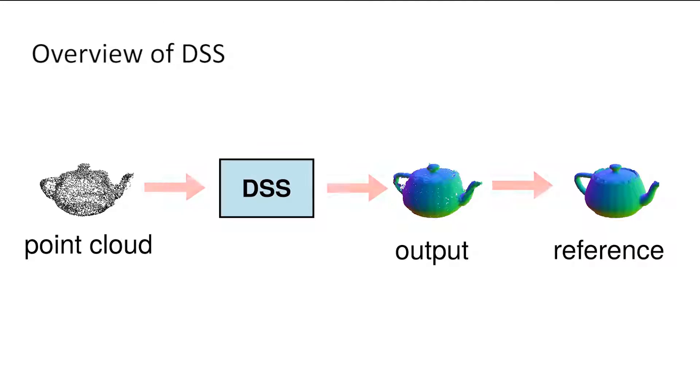Our method consists of a forward pass that renders the image and a backward pass that computes the gradients and updates the geometry.